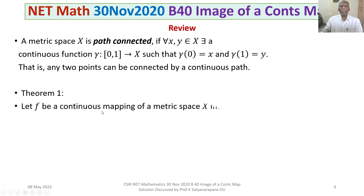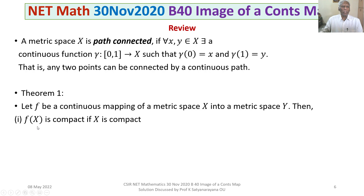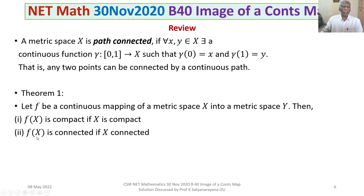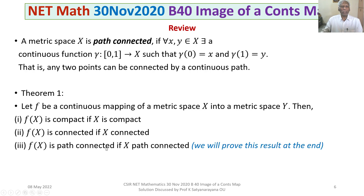Theorem 1: let f be a continuous mapping of a metric space X into a metric space Y. Then: (1) f(X) is compact whenever X is compact — the continuous image of a compact space is compact; (2) f(X) is connected if X is connected — the continuous image of a connected space is connected; (3) f(X) is path-connected if X is path-connected — the continuous image of a path-connected space is path-connected. This third result may not appear in standard MSE study, so I will give a proof at the end.